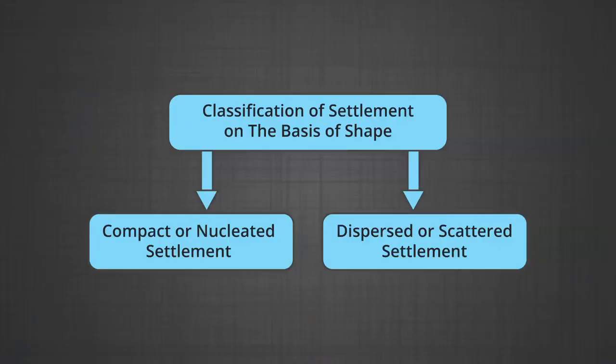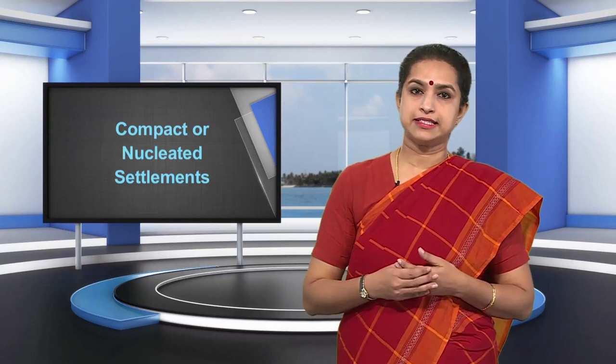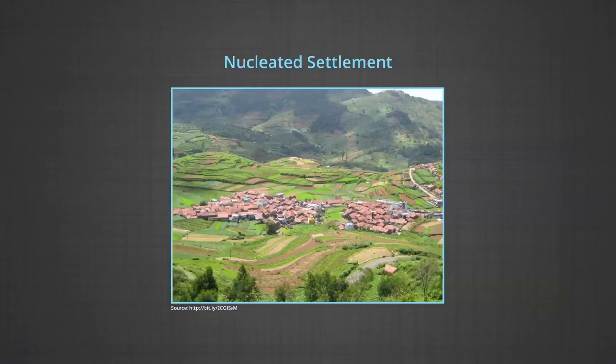Next, we are going to discuss the types and patterns of settlements. On the basis of the shape of settlements, they may be classified as compact or nucleated settlements, or dispersed or scattered settlements. Settlements that have closely built-up areas are termed compact or nucleated settlements, where large numbers of houses are built very close to each other and all dwellings are concentrated in one central site. These types of settlements develop along river valleys and in fertile plains, and communities are closely knit and share common occupations.